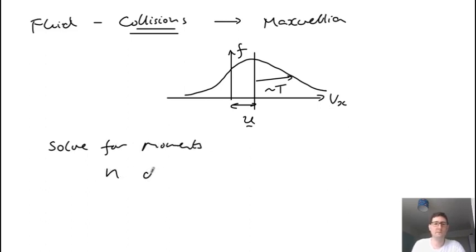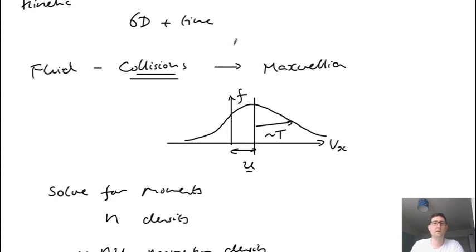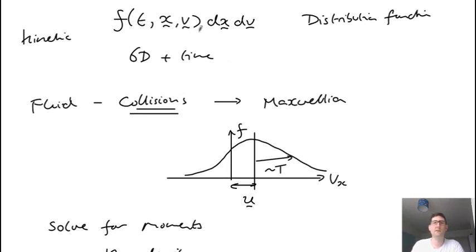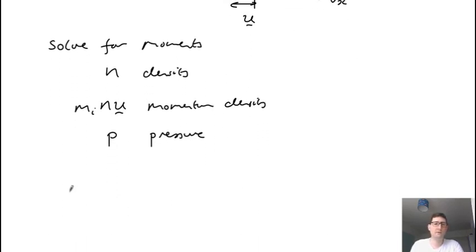So particularly the density N, the momentum NU—if you want the actual momentum you need the ion mass. But it's basically the density of particles times the velocity as a momentum density. And then you have pressure P. These could all be calculated from taking moments of these distribution functions.